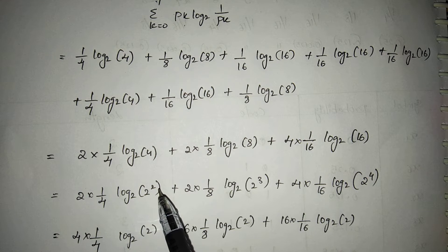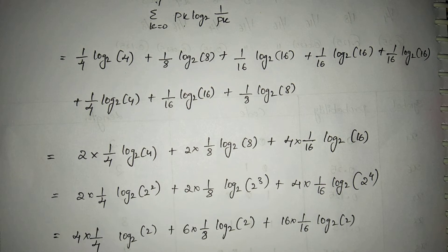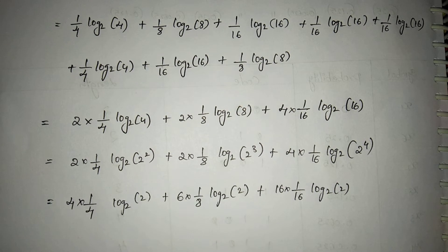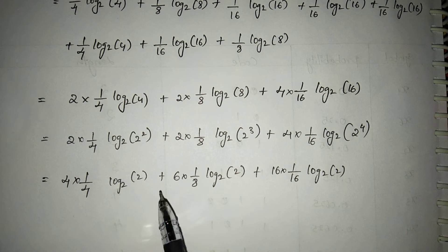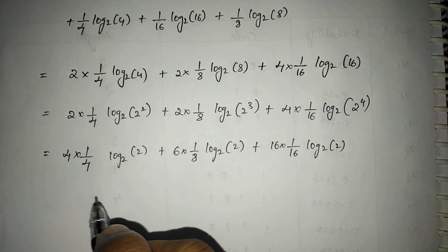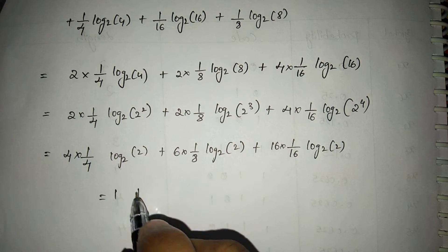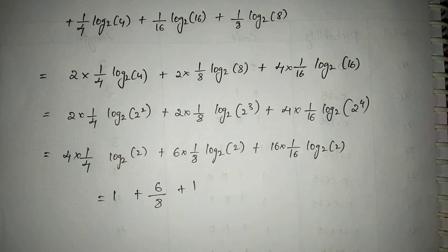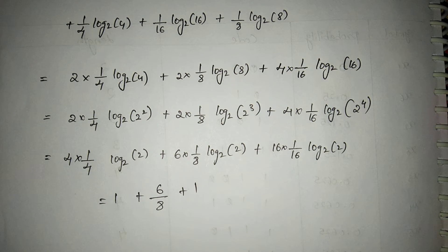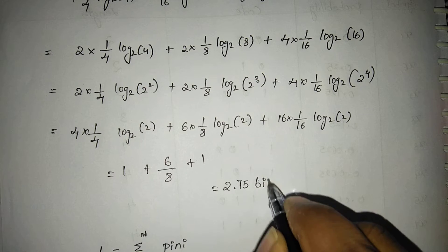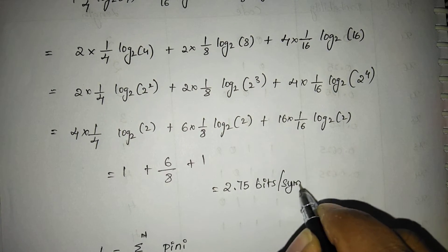We can write 4 as 2², so the term becomes 4 × (1/4) × log₂(2), and since log₂(2) = 1, this simplifies. 4 × 1/4 equals 1, and the other terms simplify to 6/8. On calculating everything we get H = 2.75 bits per symbol. Don't forget the units — bits per symbol.